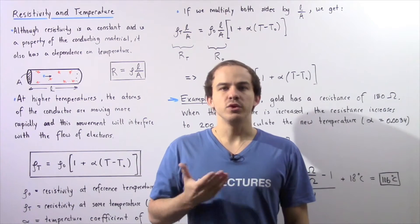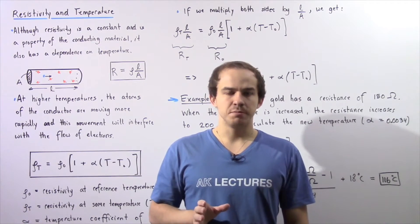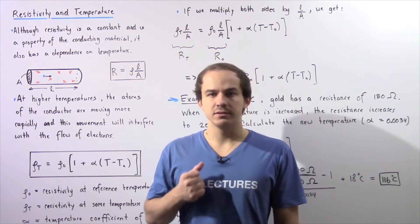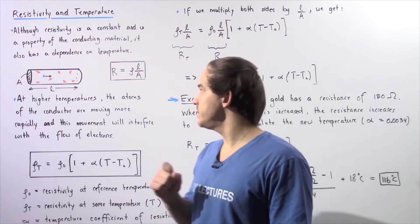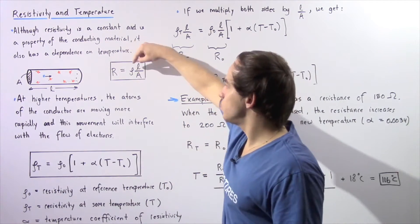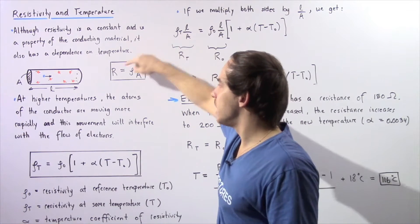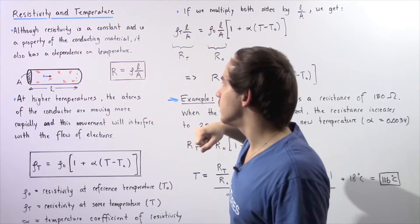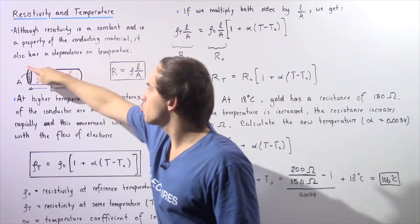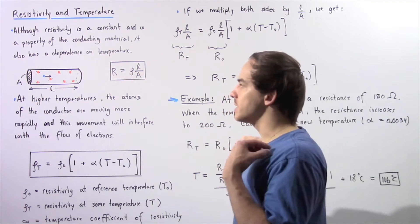In the previous lecture, we essentially gave a relationship between resistance and resistivity of a conducting material. We said that the resistance is equal to the resistivity multiplied by the length of our conducting wire divided by the cross-sectional area of that same conducting wire.